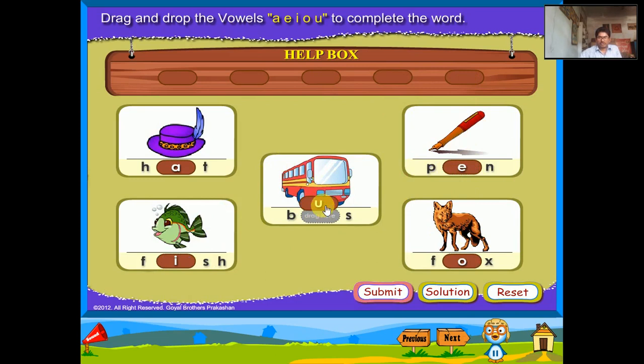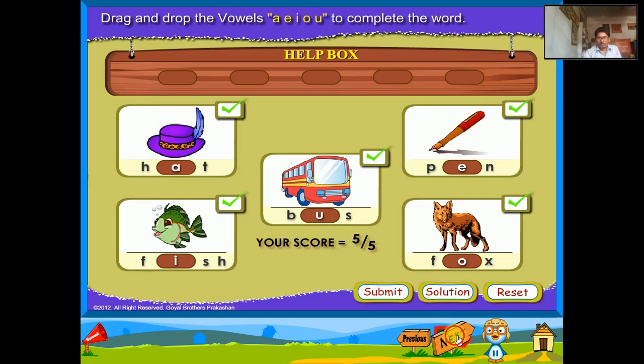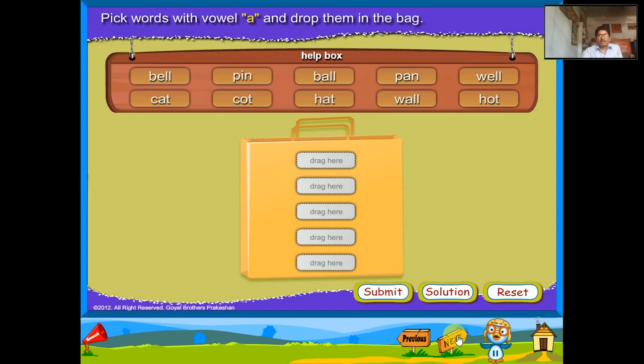Pick words with vowel A and drop them in the box. Ball — it has A. Tarn — it has A. Cat — it has A. Hat — it has A. End of Wall.